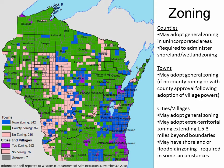In Wisconsin, the state has authorized local communities to adopt general zoning, also known as comprehensive zoning. Within unincorporated areas — meaning the area outside of incorporated cities and villages — counties may adopt general zoning. County general zoning only applies in areas where towns approve of the county zoning ordinance.